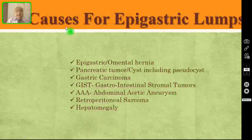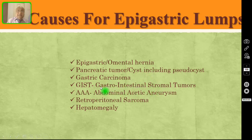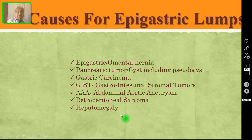What are the various causes for a lump in the epigastric region? They are epigastric or omental hernia, pancreatic tumor including pancreatic cyst and pseudocyst, gastric carcinoma — which is what I am going to discuss in this episode — GIST (gastrointestinal stromal tumours, which can occur anywhere in the intestine), abdominal aortic aneurysm (AAA), retroperitoneal sarcoma, and hepatomegaly.